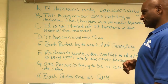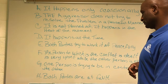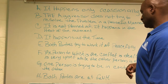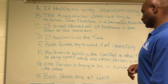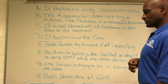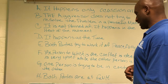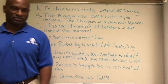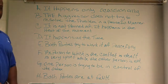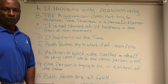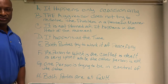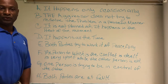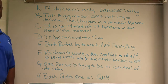G — one person is trying to be in control of the other. And both parties are at fault. And the one that you cannot see on the board is letter I, and I says: one person jokes in order to hurt or anger the other person.